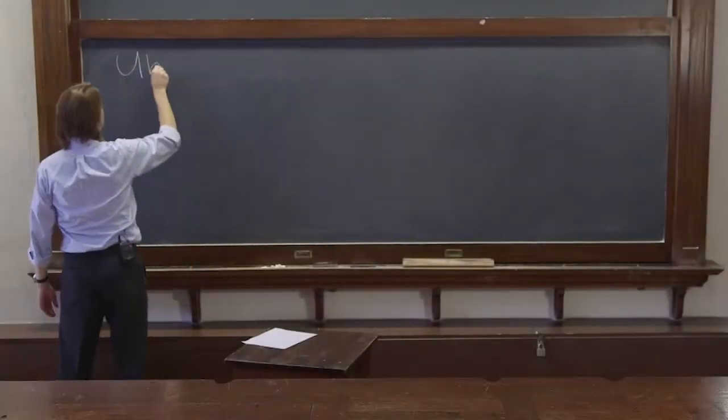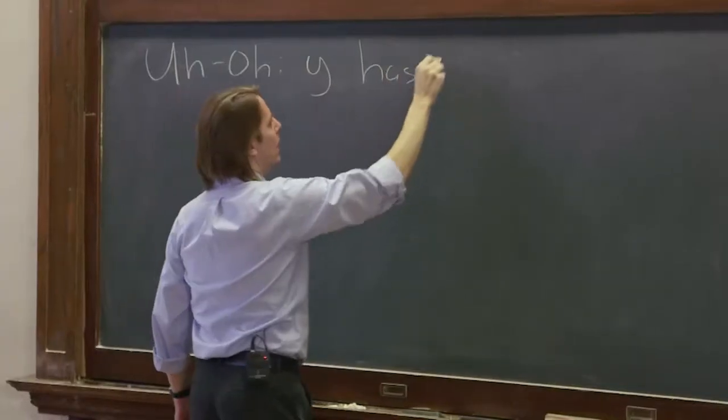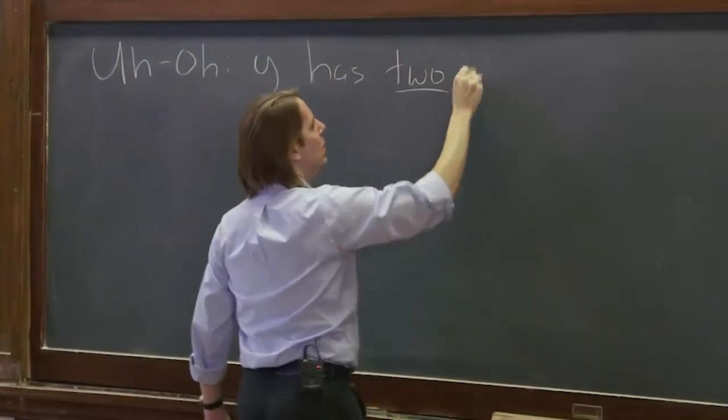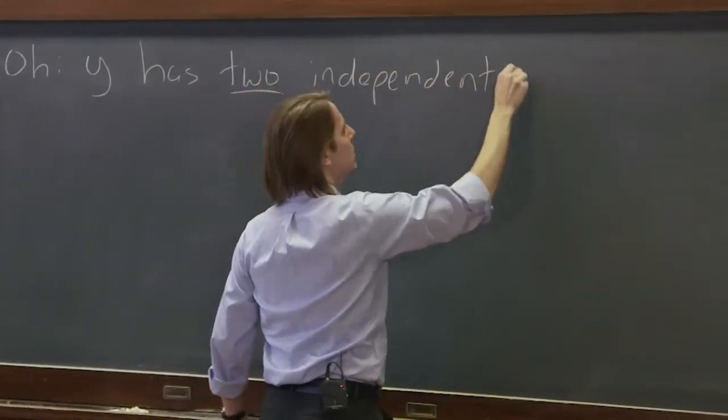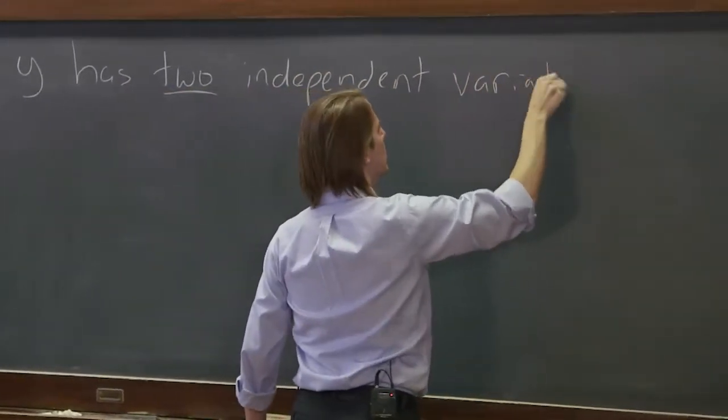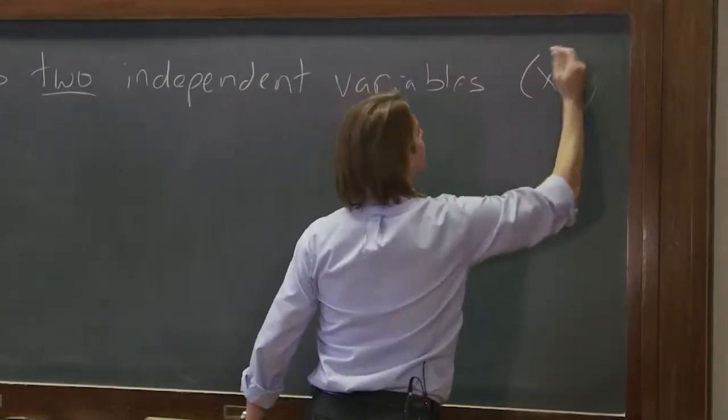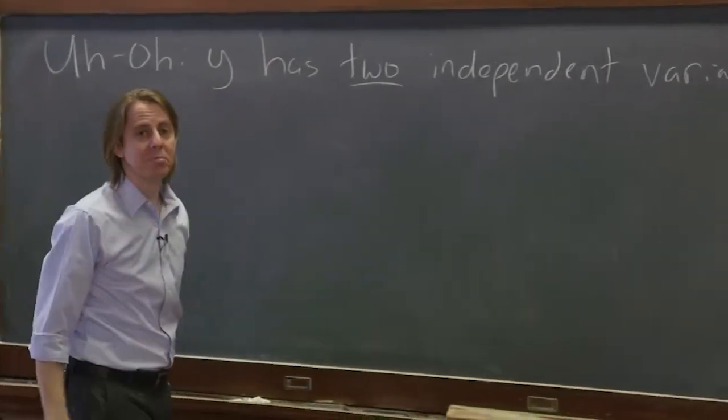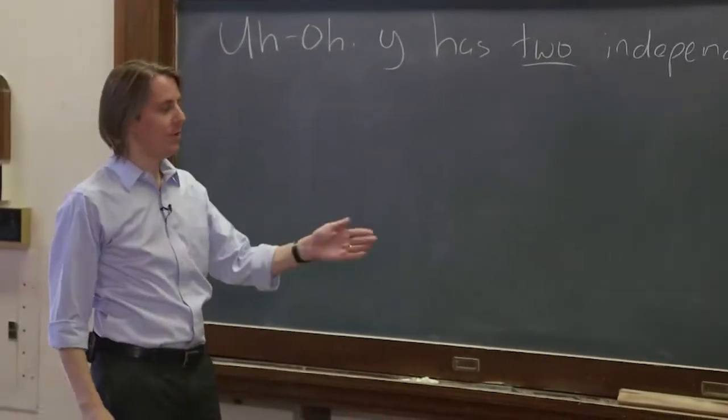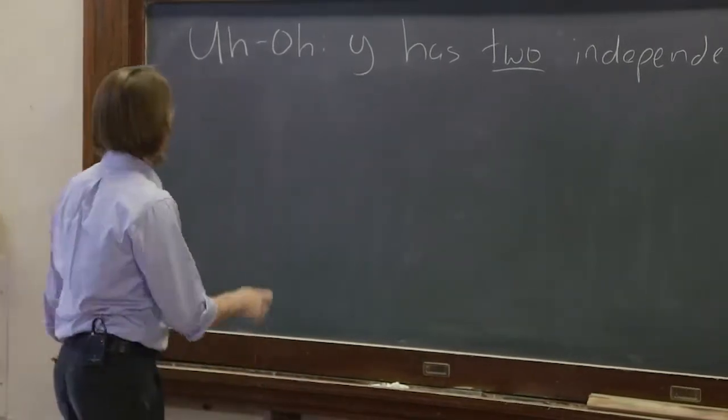Here's a problem. y has two independent variables, x and t. y is a function of x and t, and you can move either one however you want. You can move around in space, or you can wait for something else to happen in time. So let's look real quick at how we deal with that.